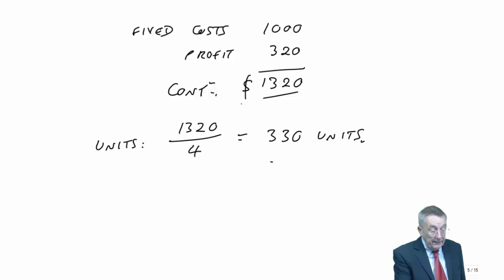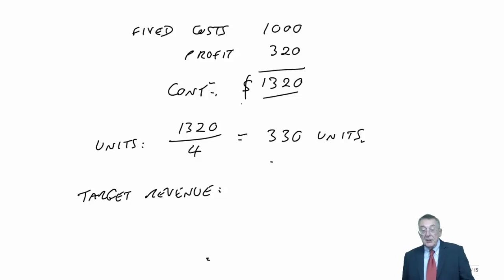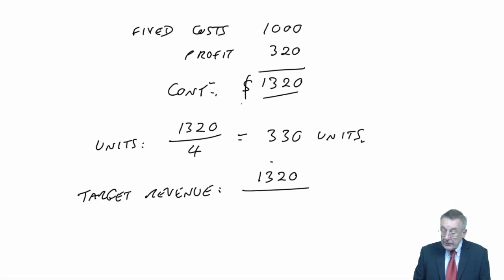The formulas are in the notes. That's how many we need to sell in numbers of units. Alternatively, if we wanted the revenue, the target revenue, if you'd already done it in units, you can simply multiply by the $6 a unit selling price, so 330 times 6 is $1,980. Or more generally and a bit neater, use the CS ratio again.